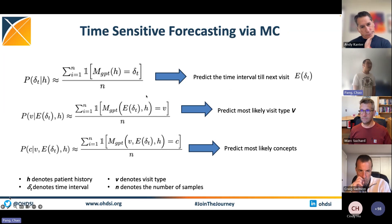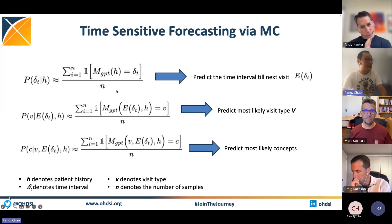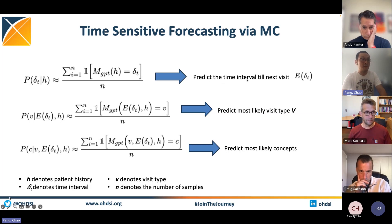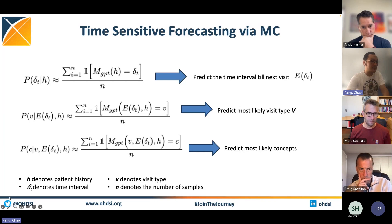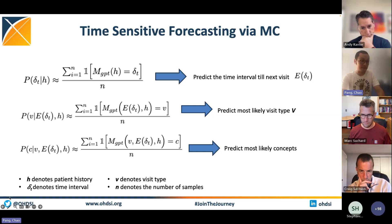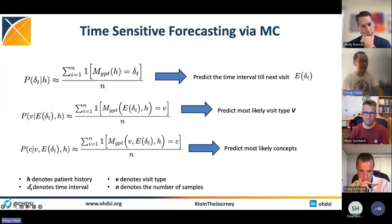One potential application I find very exciting is time-sensitive forecasting through Monte Carlo sampling. The idea is that we prompt the trained GPT model using a patient history to generate a sample of time tokens, then take the expectation to predict the time interval to the next visit — represented by the expectation of Delta T. Then we prompt GPT again using the patient history and expected time interval to predict the most likely visit type, and once more to predict the most likely concepts associated with those visits. Not only can we predict future medical concepts, but also predict when the next visit will occur — which I think is pretty cool and pretty new.